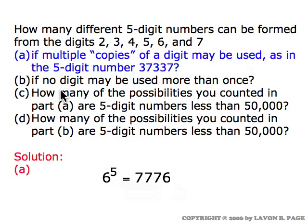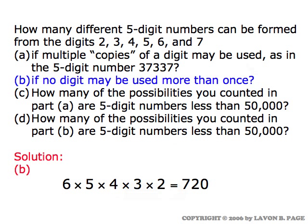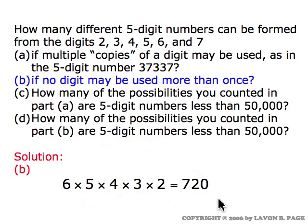In part B, the rules change and we're not allowed to use any digit more than once. For the first digit we can use any of the six digits, but after one is used up we only have five remaining choices for the next spot, then four, then three, then two, then one. So our total number of possible five-digit numbers choosing from these digits with no repetition is six times five times four times three times two, which is 720.